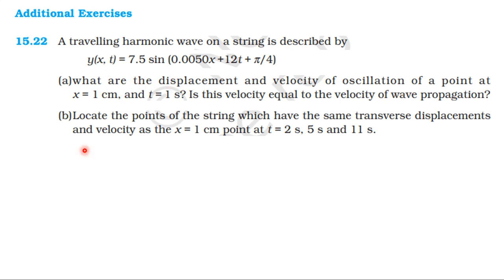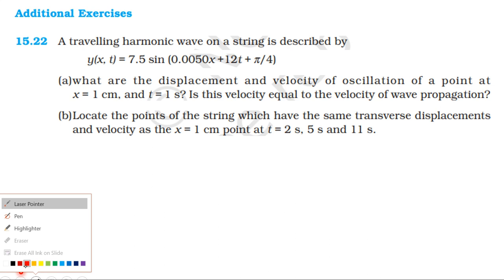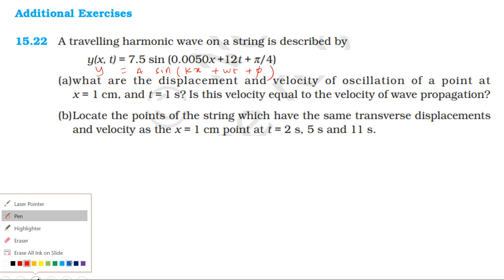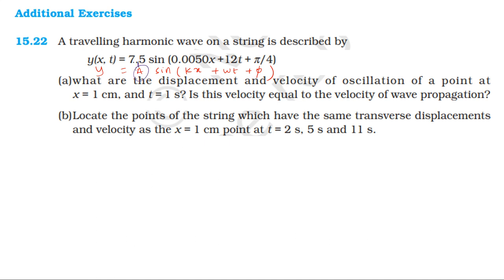To solve the problem, the standard traveling wave equation is y equal to A sin(kx plus ωt plus initial phase). Comparing, A is 7.5, k is 0.005 per cm, and omega is 12. The initial phase is 5π/4. Amplitude is 7.5 cm and k is 0.005 per cm.